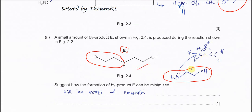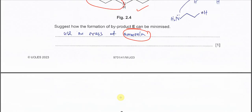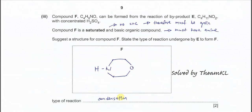The amine group of 2-aminoethanol attacks the partial positive carbon of the oxirane and further reacts to form byproduct E. Therefore, to minimize the formation of E, you need to use excess ammonia. When there is more ammonia, ammonia preferentially reacts with the oxirane, reducing byproduct formation.